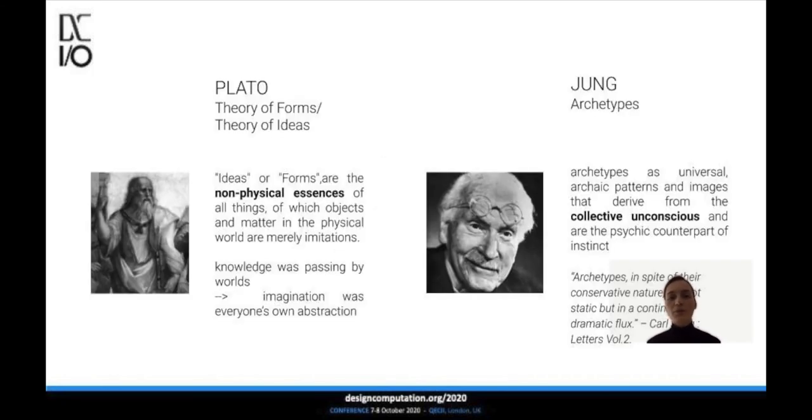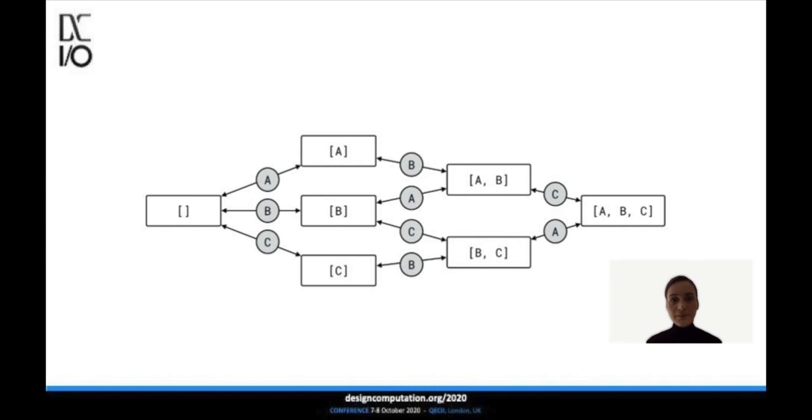The primary form of the model was defined by Plato. He called them ideas: timeless, absolute, unchangeable ideas, and he used the word imitations for defining the real physical world. At the time, knowledge was passing by words. Thus realization of the ideas required intensive abstraction. Archetype by Jung are universal archaic patterns and images that derive from the collective unconscious and are the psychic counterpart of instinct. In the words of Jung, archetypes, in spite of their conservative nature, are not static, but in continuous dynamic flux.